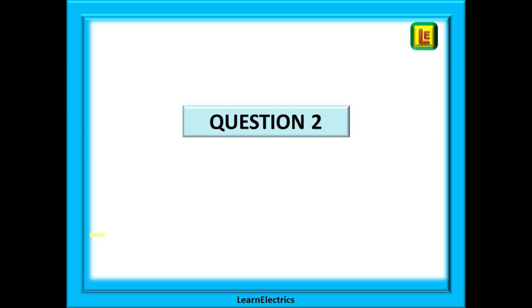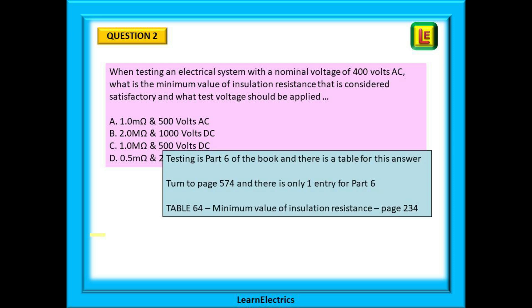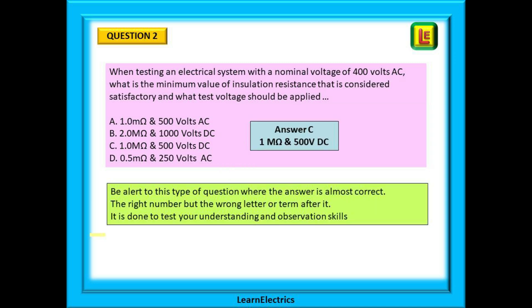Another exam style question: when testing an electrical system with a nominal voltage of 400 volts AC, what is the minimum value of insulation resistance considered satisfactory, and what test voltage should be applied? Testing is part six of the book and there's a table for this. Turn to page 574 — there is the only entry: table 64, minimum value of insulation resistance, directing us to page 234. The answer is 1 mega ohm and 500 volts DC. Answer C uses a capital letter M indicating mega ohms, and the DC test voltage is correct — therefore choose answer C.